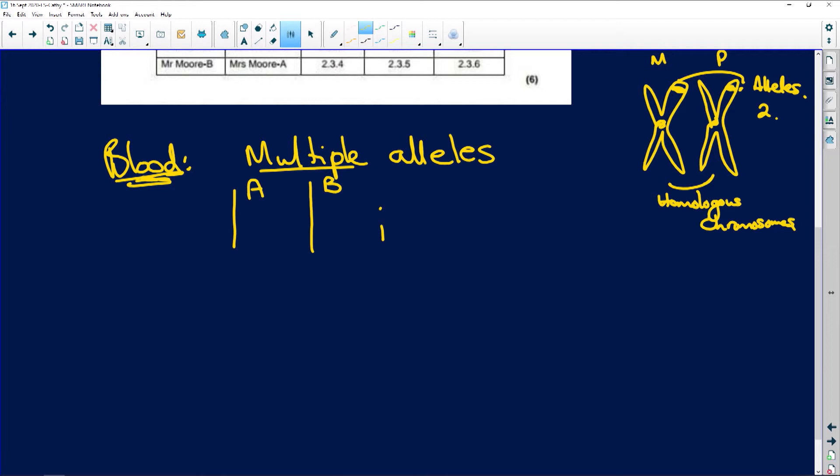So how do we work this out? So if we go blood groups, these are alleles. There's A, B, and this little i. So how does it work? For blood group O, we have two recessives. Mind you, let me do this first. So A and B are co-dominant...